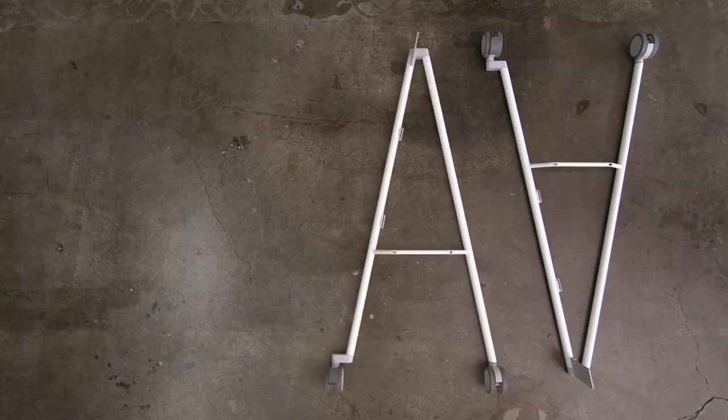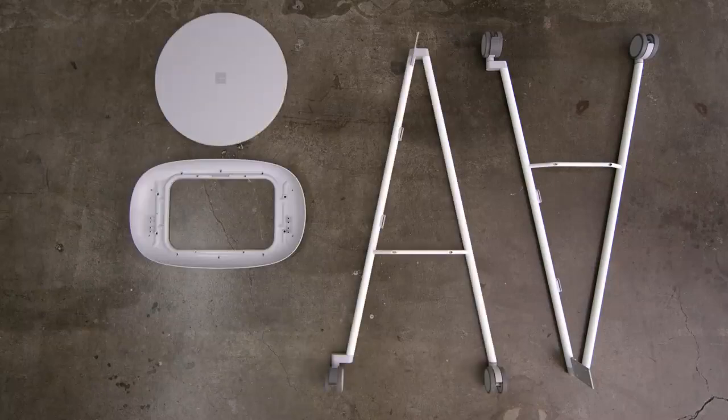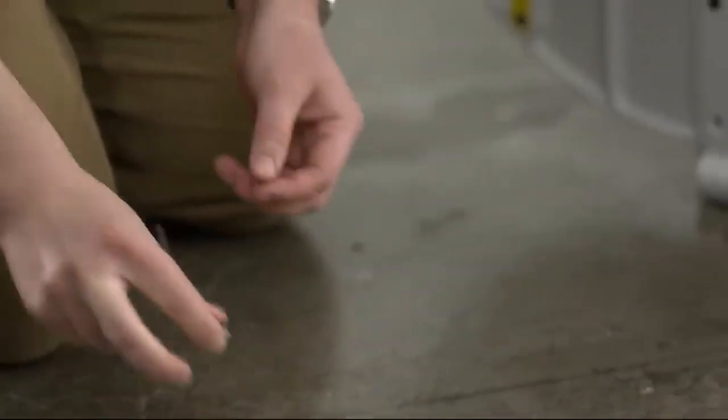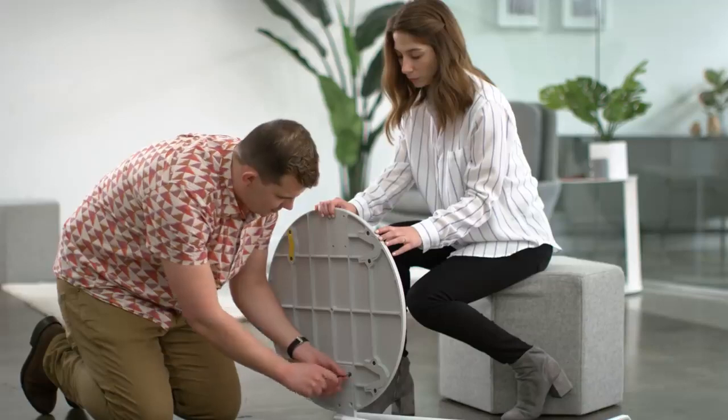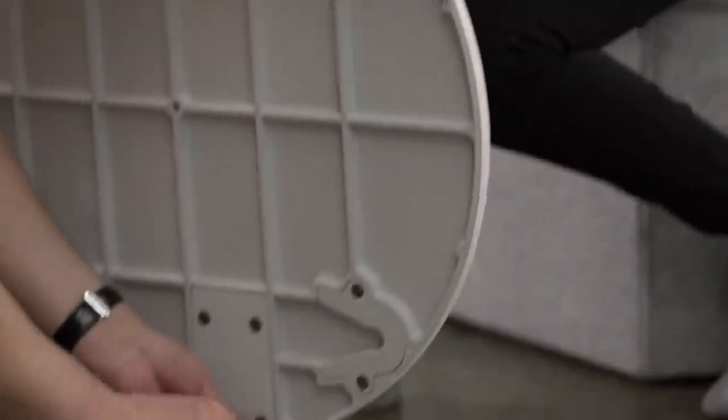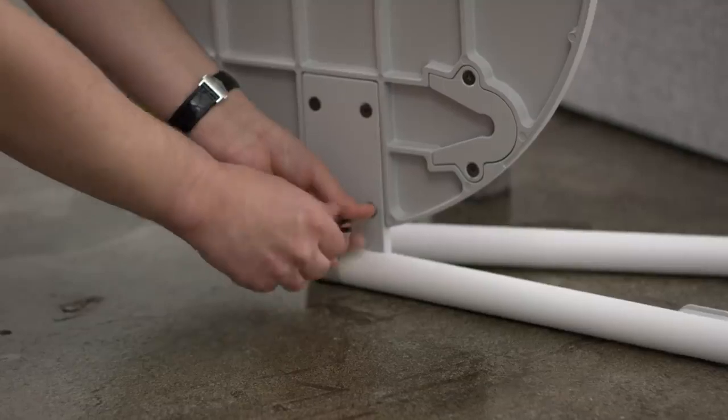To start assembling the Steelcase Roam mobile stand, begin by removing all the components from the box. Begin by opening the green bag and then attach the mounting plate to the first leg. Ensure that you attach the bracket on the leg to the correct side of the mounting plate.